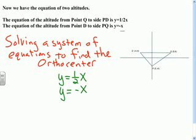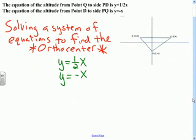So now that I know the equation of both of those altitudes and I wrote them right here, I need to figure out where they intersect because where they intersect, that is going to be my orthocenter. So what I'm going to do is I'm going to solve this system right here by taking both equations and I'm going to set them equal to each other.